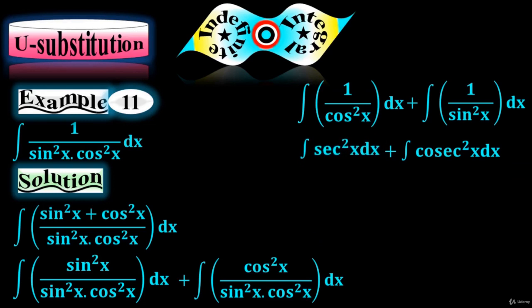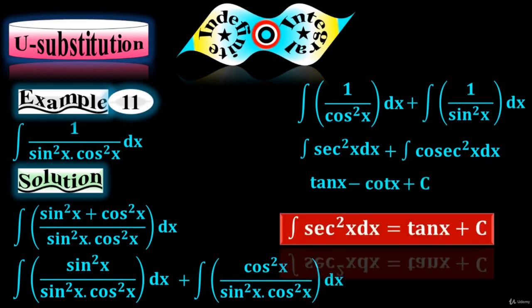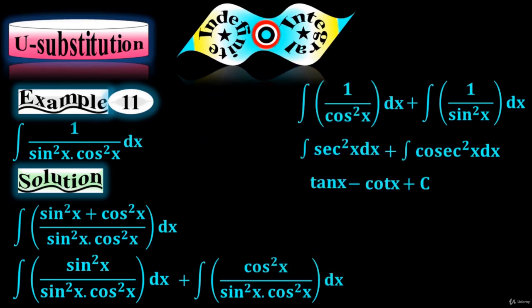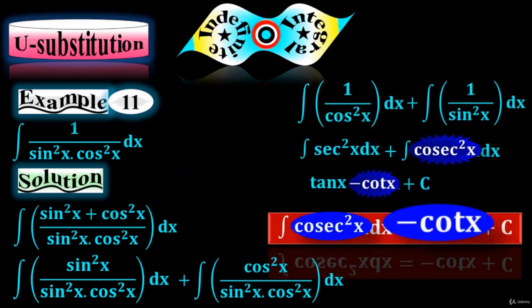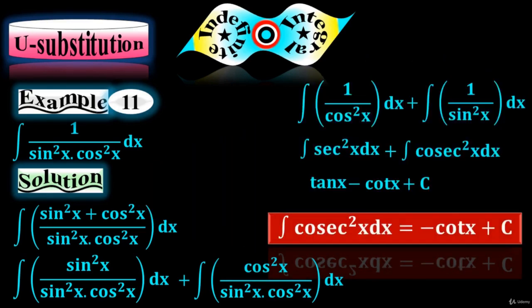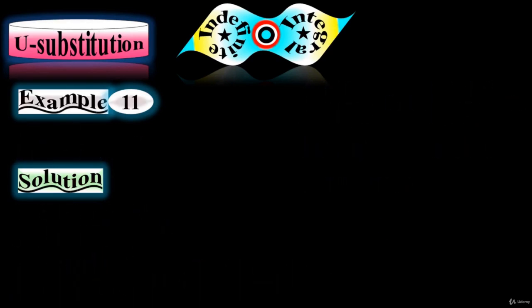Now, 1 over cos²(x) equals sec²(x) and 1 over sin²(x) equals csc²(x). The integral of sec²(x) dx equals tan(x), and the integral of csc²(x) dx equals minus cot(x). Therefore the final answer is tan(x) minus cot(x) plus C. This concludes the u-substitution process for indefinite integrals.